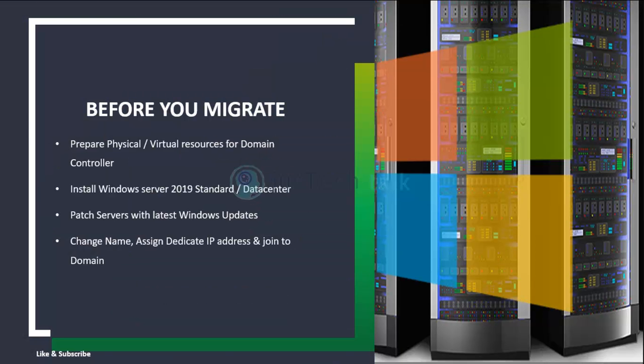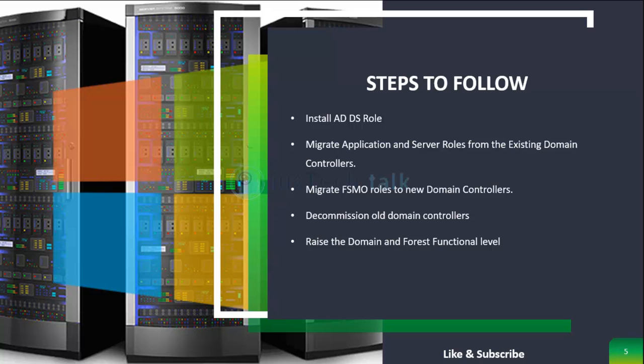We should have either a physical or virtual server depending on the environment. We need to install Windows Server 2019 Standard or Datacenter, patch it to the latest Windows updates, activate it, change the name, assign a dedicated IP, and join it to the domain. Business requirements analysis and planning should also be in place, but since this is a lab environment we'll focus on what needs to be in place technically.